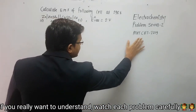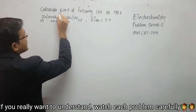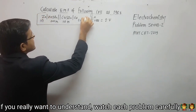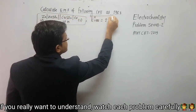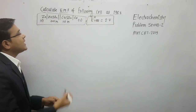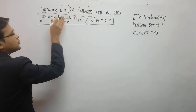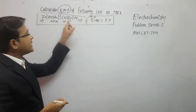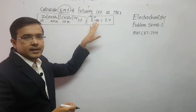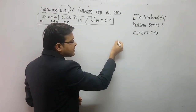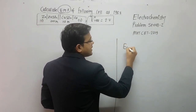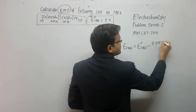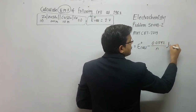A question asked in 2019: calculate the EMF (electromotive force) of the following cell at 298 Kelvin. The standard EMF of this cell, E0 cell, is 2 volt. We need to find the simple EMF, not the standard EMF. So, the equation is: E_cell = E0_cell minus 0.0592 upon N, log base 10.